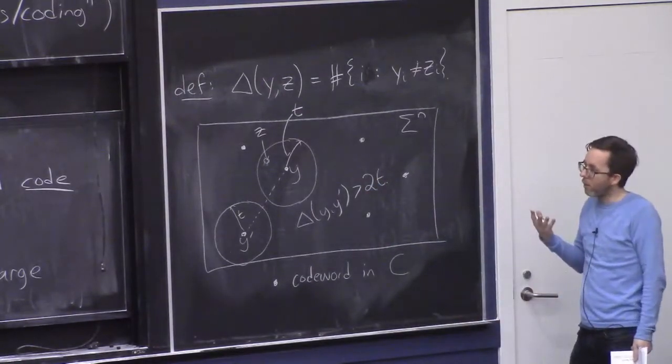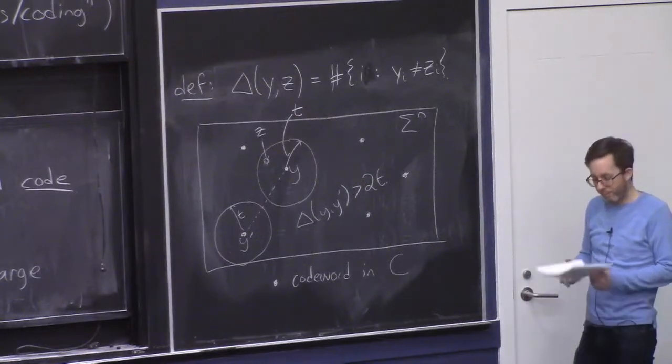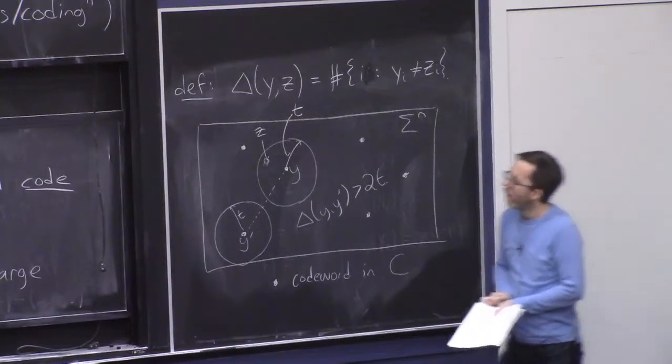Whatever the received word Z is, it uniquely maps to some closest codeword Y. And then the receiver can, at least in principle, determine what Y was. So that motivates the following definition.